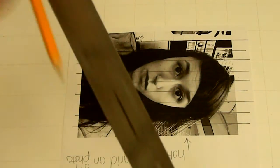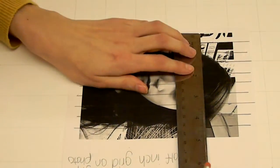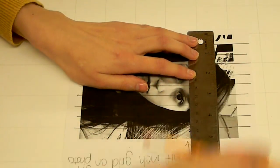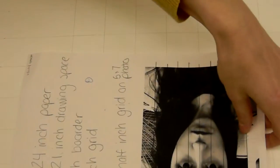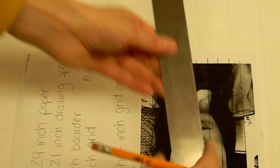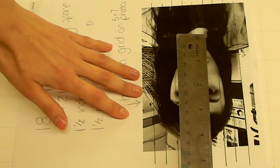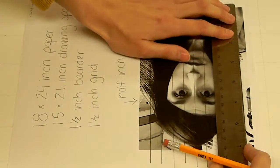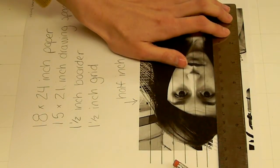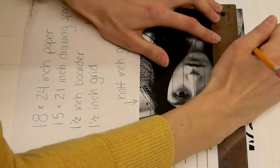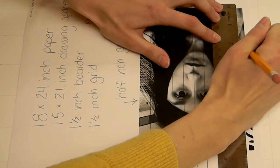I'll take my ruler and measure every half inch. I'm going to start from the top and make little tick marks. On your photograph you'll want to draw your lines fairly dark.